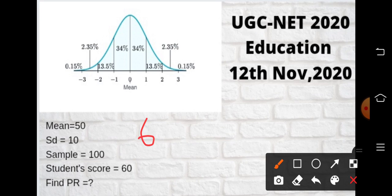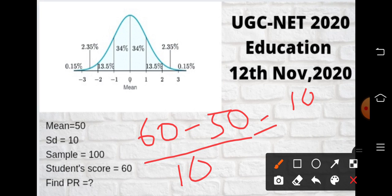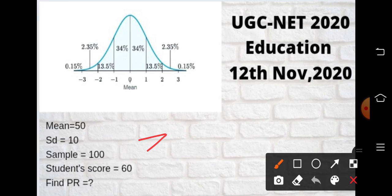Let's put the formula: X is 60 minus mean is 50, divided by SD which is 10. So 60 minus 50 equals 10, and 10 divided by 10 equals 1. So the Z-score will be 1.